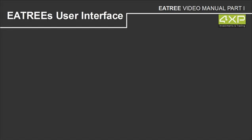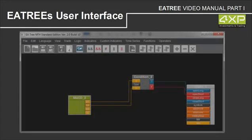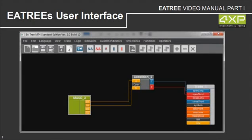Now we're looking at EA3's user interface. Here we have the text menu where you can access indicators, custom indicators, time series functions, and so on. The most important functions are accessible using these graphical buttons here. This black field is the so-called desk — on this desk we build our expert advisor.